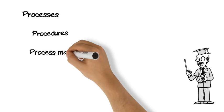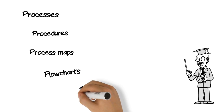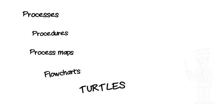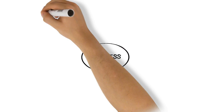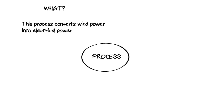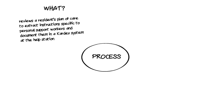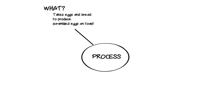The first question about any process is: what does this process do? This process converts wind power into electrical power. This process reviews residents' plan of care to extract instructions specific to personal support workers and documents them in a cardiac system at the help station. This process takes eggs and bread to produce scrambled eggs on toast.